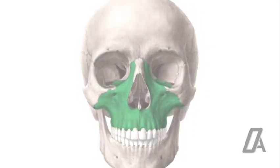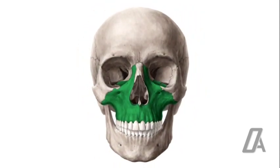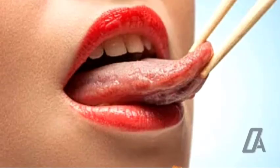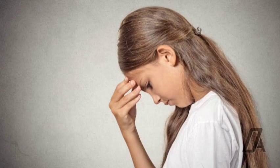Moving on to the second implication, difficulty in speech. The maxilla plays a vital role in our ability to articulate sounds. If it grows abnormally, it can affect the placement of the tongue and the movement of the lips, leading to speech impediments. This can have a profound impact on a person's social interactions and self-confidence.